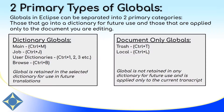Trash globals allow you to global the same steno throughout an entire document but not save it into your dictionary. And local globals allow you to replace a single instance in the document and also not save that entry to your dictionary.